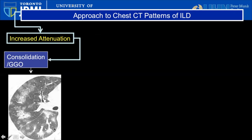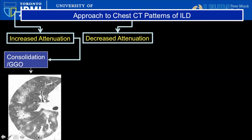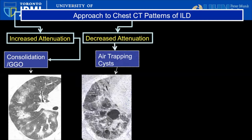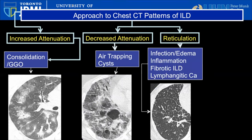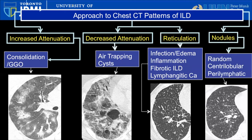Some examples are shown here with nodular consolidation in the right lower lobe where the edges of the vessels are no longer defined. Next, I'll speak about areas of decreased lung attenuation, focusing on air trapping and cysts, and also reticulation, which is basically too many lines. These can be seen in infectious and inflammatory conditions as well as fibrotic interstitial lung disease and diffuse lymphangitic carcinomatosis. Then we'll touch upon nodules and focus on their distribution: random, centrilobular, and perilymphatic.